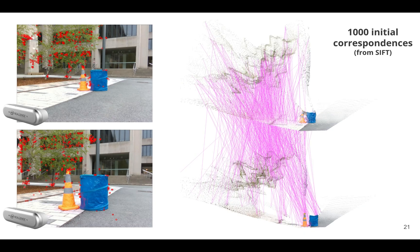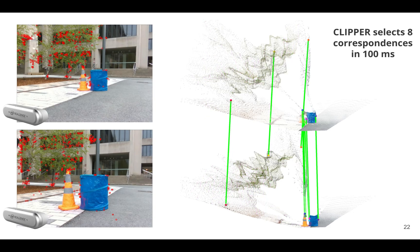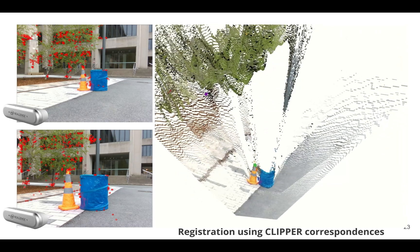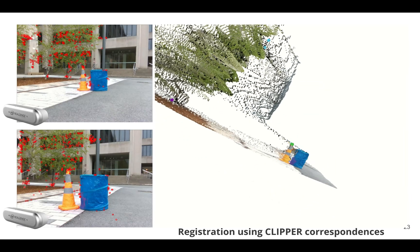So what we do is we take these raw point clouds, we generate 1000 initial correspondences between them. And then by applying Clipper, we select, in this case, we selected eight correspondences in about 100 milliseconds. And these correspondences then allow us to correctly register these two frames from two robots.